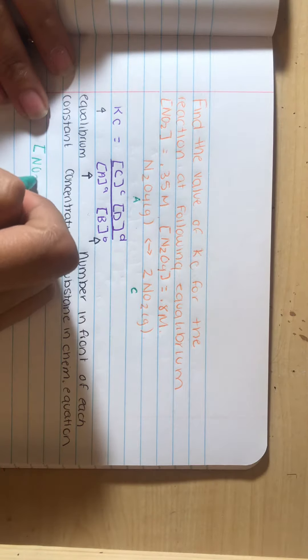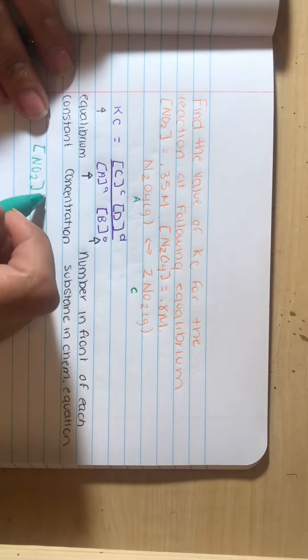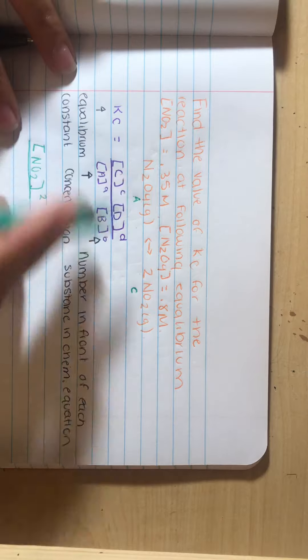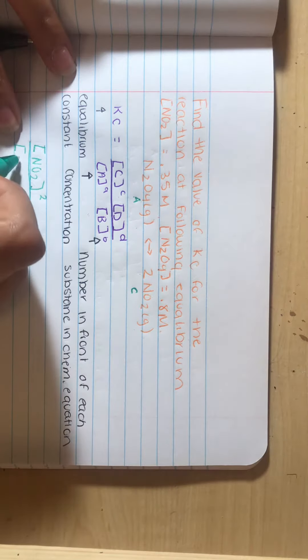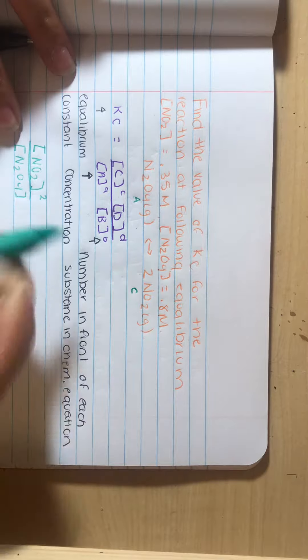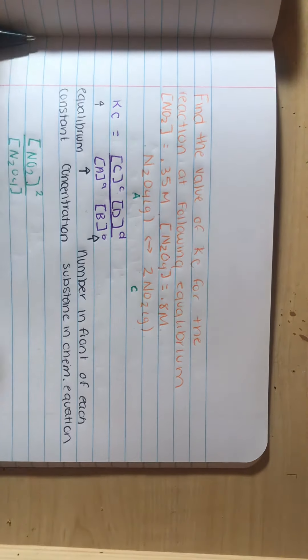So we're going to start at the top with C. It's going to be NO2. And since we do have a 2 in front of it, that 2 becomes a number at the top. And then at the bottom, we're going to have A. So we're going to have the concentration of N2O4. And since this one doesn't have a number in front of it, we don't put anything. We just leave that blank.